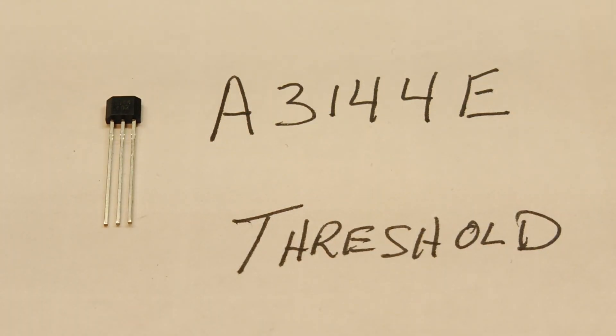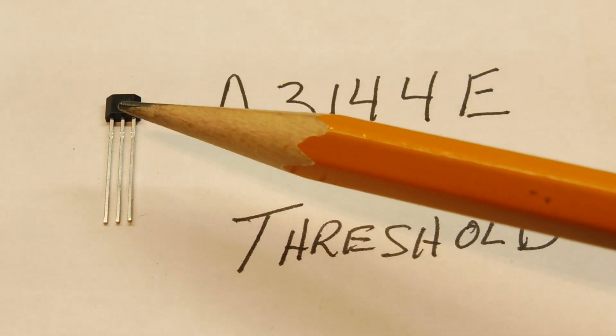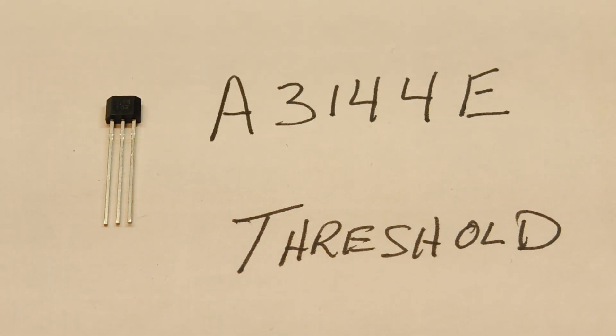Now this device will detect and react to a magnetic field density or flux density. So if you bring a permanent magnet close enough to this Hall effect switch and the flux density exceeds a certain threshold level and the polarity is correct, now this one will react to a south pole magnet, this Hall effect switch will turn on.